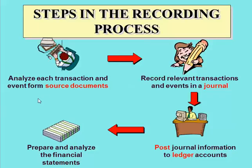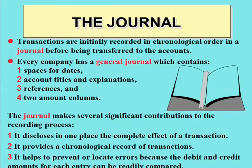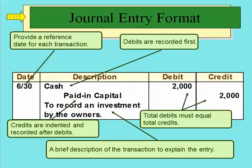Here's the basic recording process. We analyze transactions from receipts, bills, or whatever it might be. We record those transactions in a journal, then post that information into a ledger — which is where we keep all the accounts — and then we can prepare the financial statements. The journal is where we record every transaction in chronological order based on date, and it's a good place because we keep all transactions in one location, which helps prevent errors.